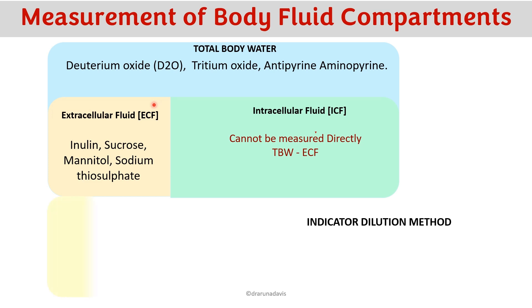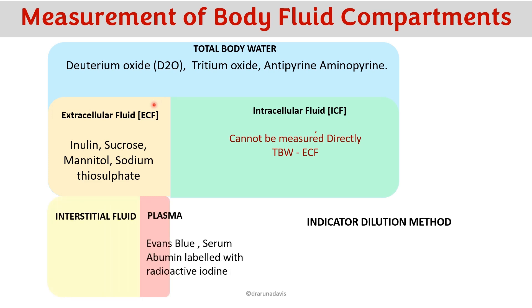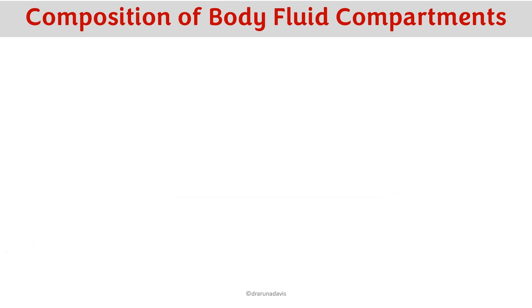Plasma volume can be measured using indicators like Evans blue and serum albumin labeled with radioactive iodine. Interstitial fluid also cannot be measured directly — it is calculated by subtracting the plasma volume from the ECF volume. This is how we measure all the different body fluid compartments.